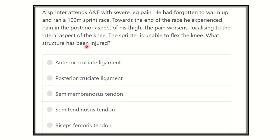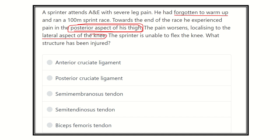So, what structure has been injured? First, we have to find the key points from the question: a sprinter attends accident and emergency, he had forgotten to warm up, and he experienced pain in the posterior aspect of the thigh. We need to find out which posterior thigh muscle is involved, and then identify which muscle localizes to the lateral aspect of the knee — that is the injured structure.